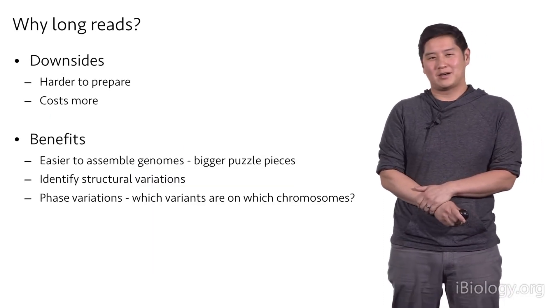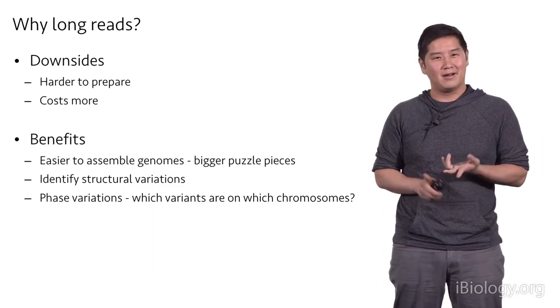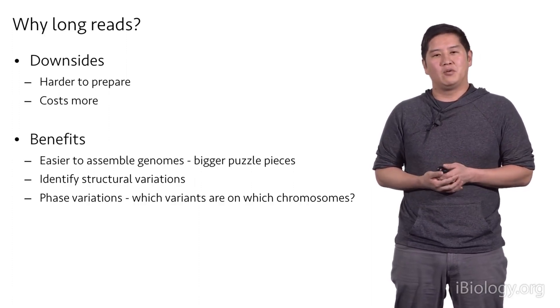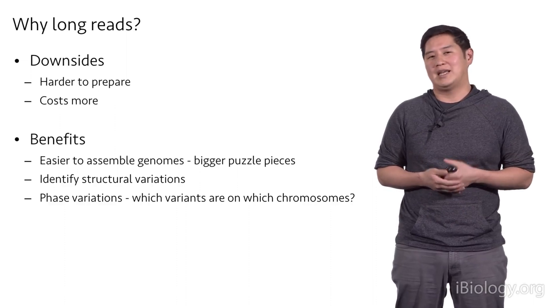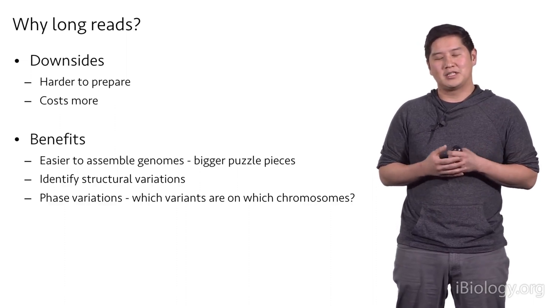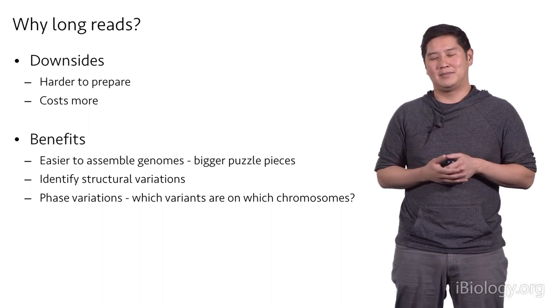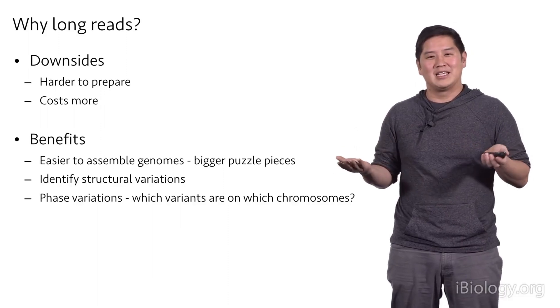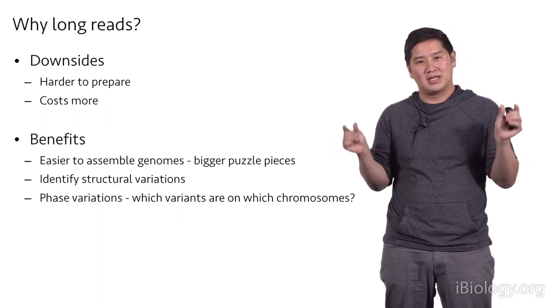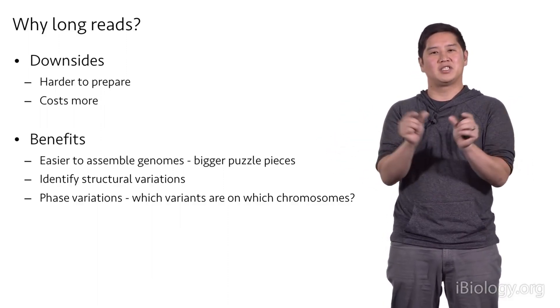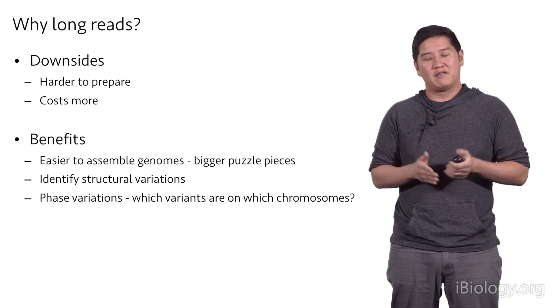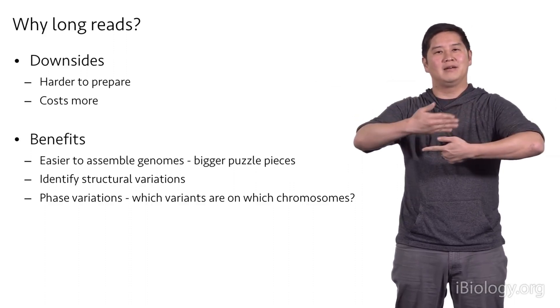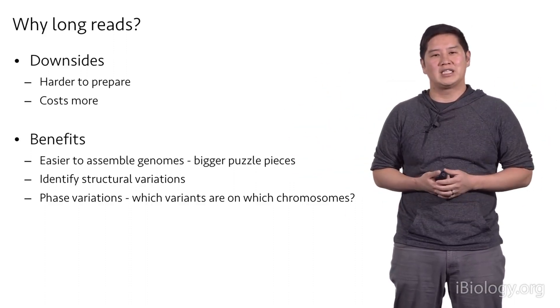So why do long reads? Because there are certain downsides. They're harder to prepare. In general, they cost more, but there are certain benefits. And one example is if you want to assemble a new genome that hasn't been sequenced before. And so this is kind of like solving a puzzle that's been either split into 10,000 pieces or into four pieces. Illumina sequencing is analogous to the 10,000 pieces because you have many, many short reads that you have to stitch together. And this can be very, very difficult. However, if you have very long reads and not that many of them, it's really easy to align them to rebuild this new genome that you want to assemble.